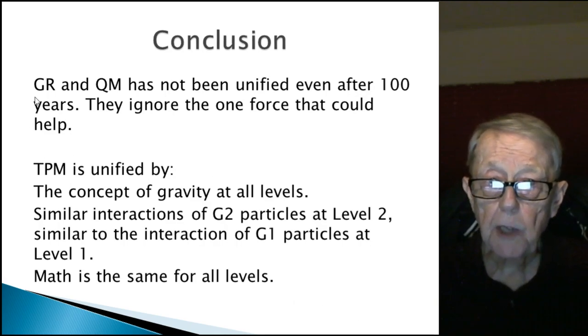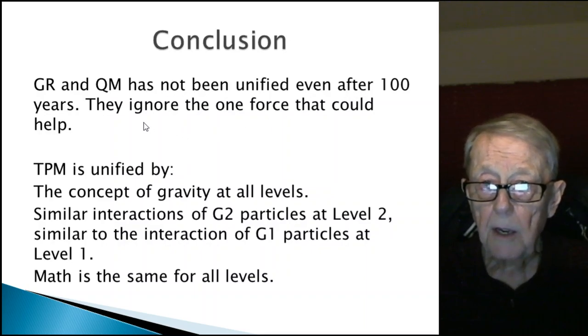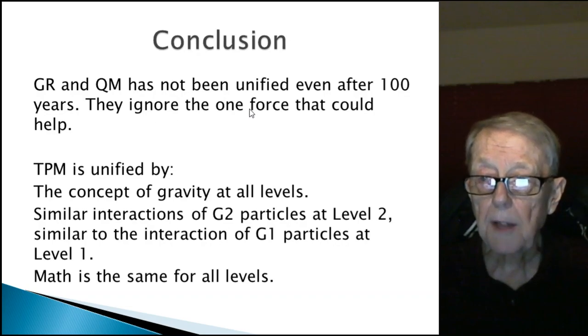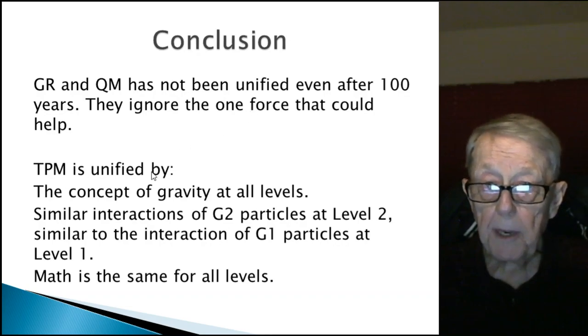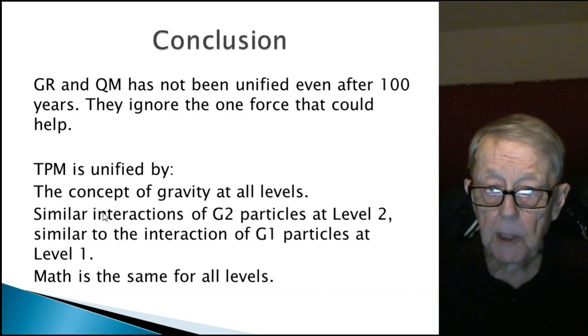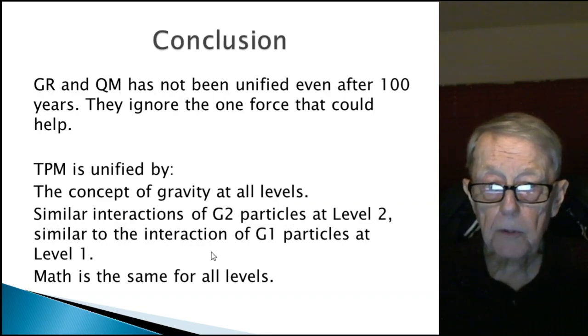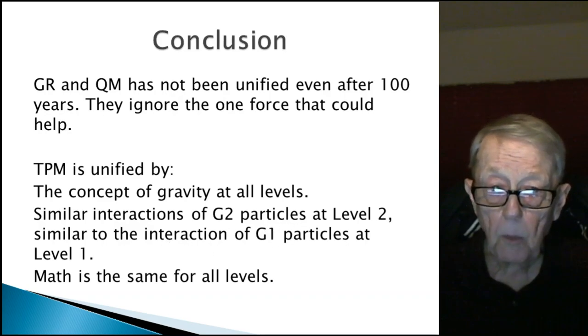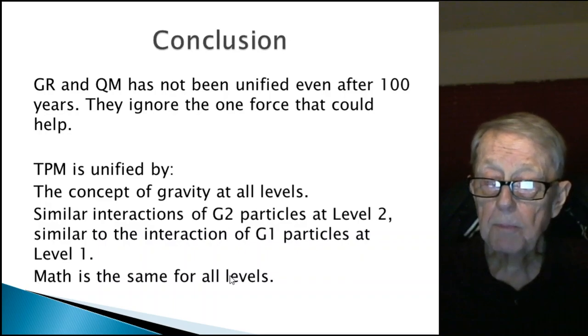Here's my conclusion. General relativity and quantum mechanics has not been unified even after a hundred years. But they ignore the one force that I think could help. TPM is unified. The concept of gravity is at all levels. There are similar interactions of G2 particles at level 2 similar to the interaction of G1 particles at level 3. It's the same thing. They either pass all the way through or they hit and scatter or they get trapped. And that's true of level 1 and that's true of level 2. And finally, the math is the same. TPM is already unified.